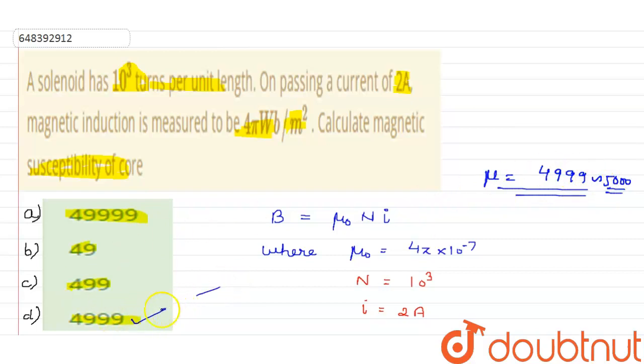So that's why we can say that our correct option is option number D because it is near to 5000 as compared to A, B, and C. That's my correct answer, option number D. I hope this is clear to you all, thank you very much for watching this video.